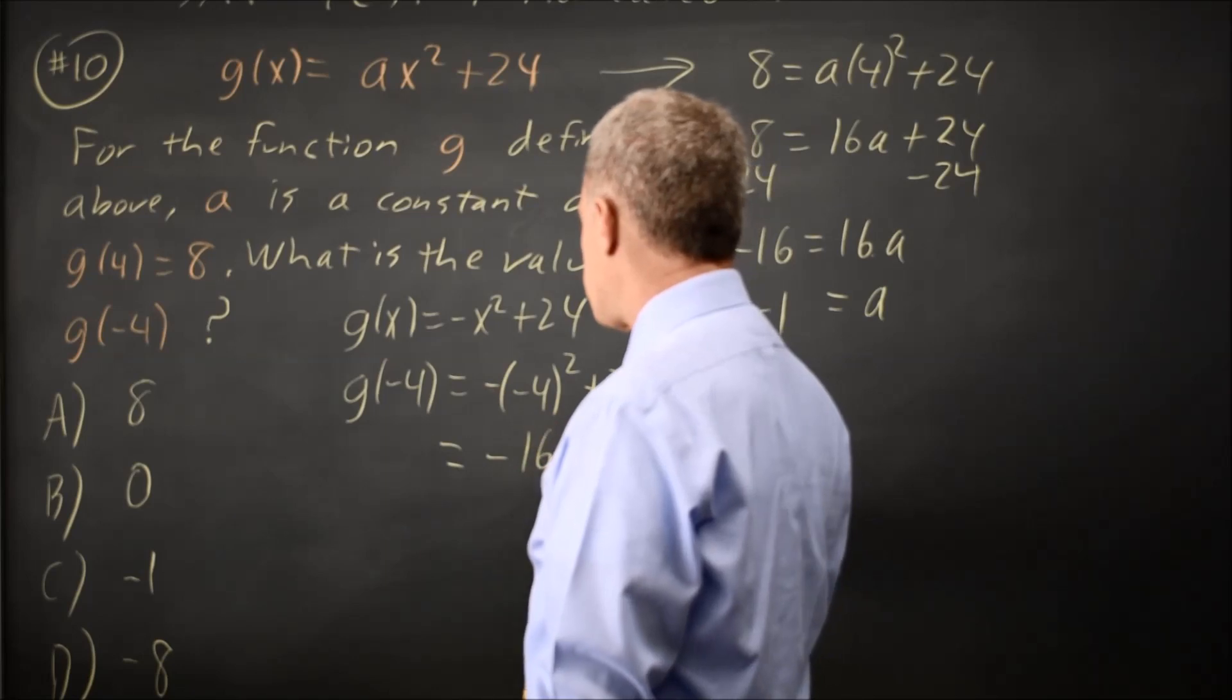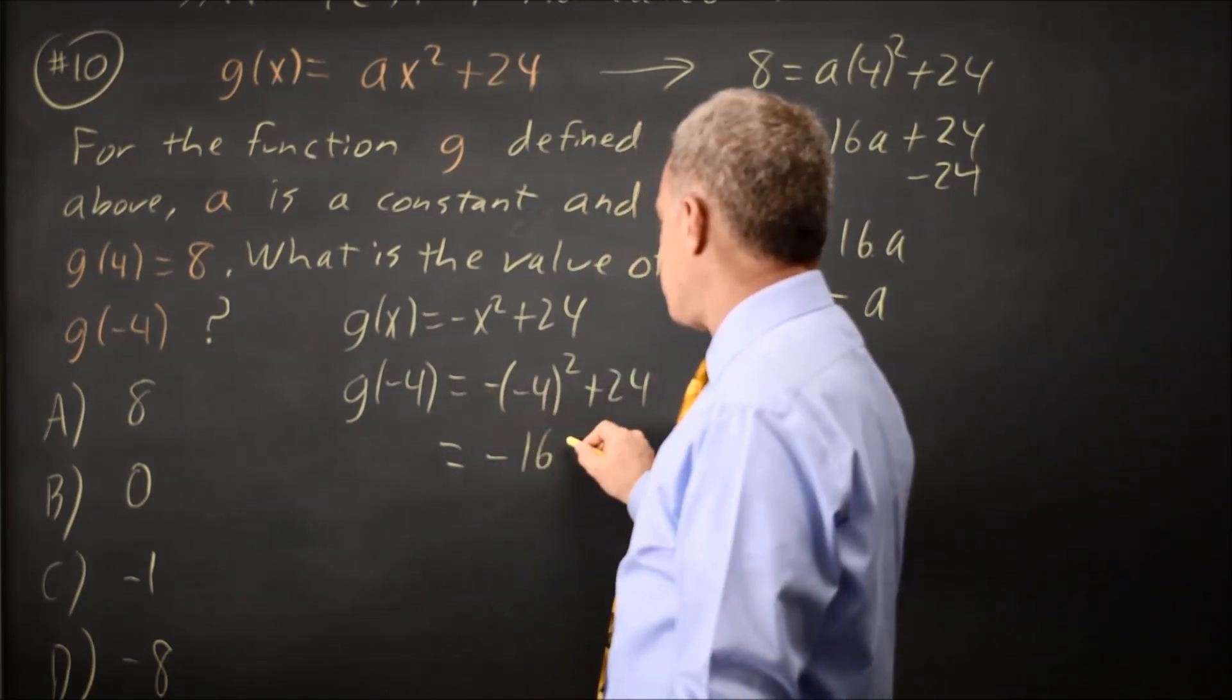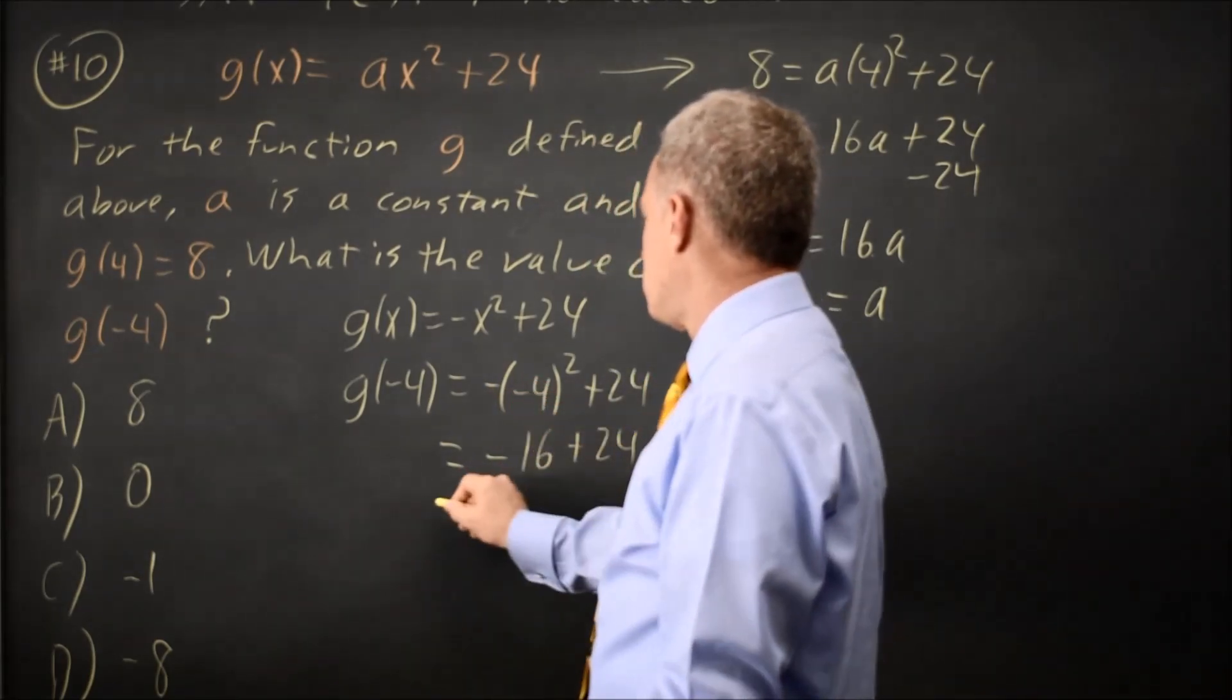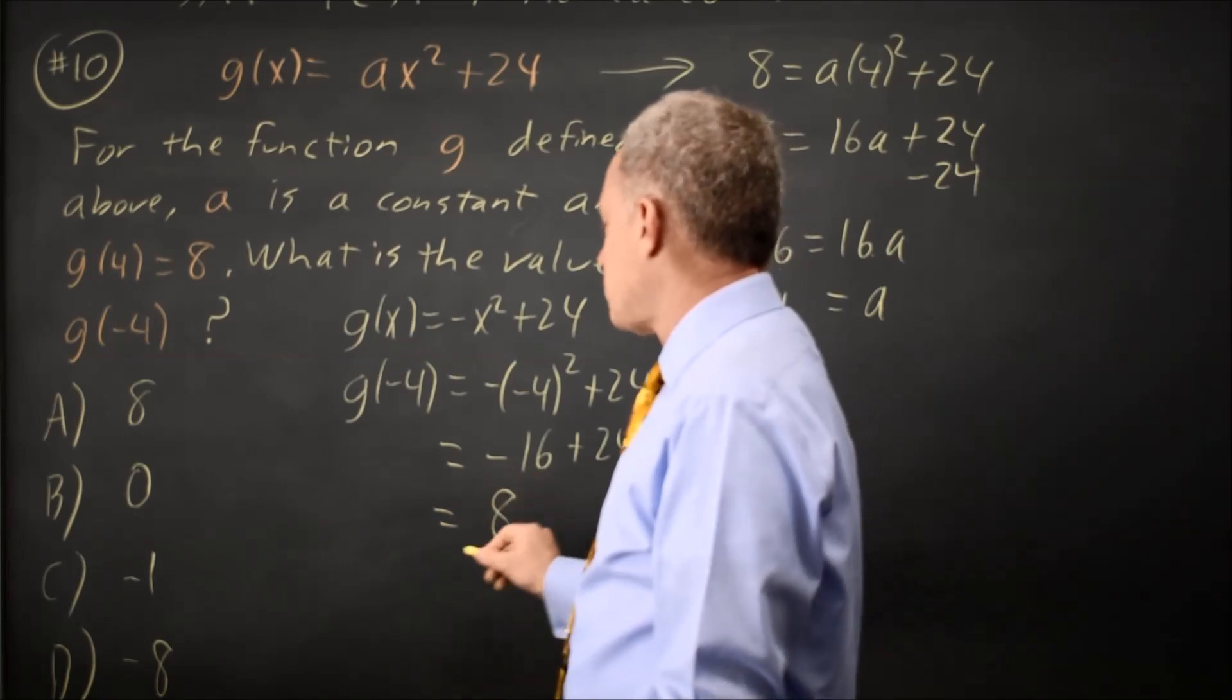Negative 4 squared is positive 16, so the negative of that is negative 16 plus 24. g of negative 4 equals positive 8.